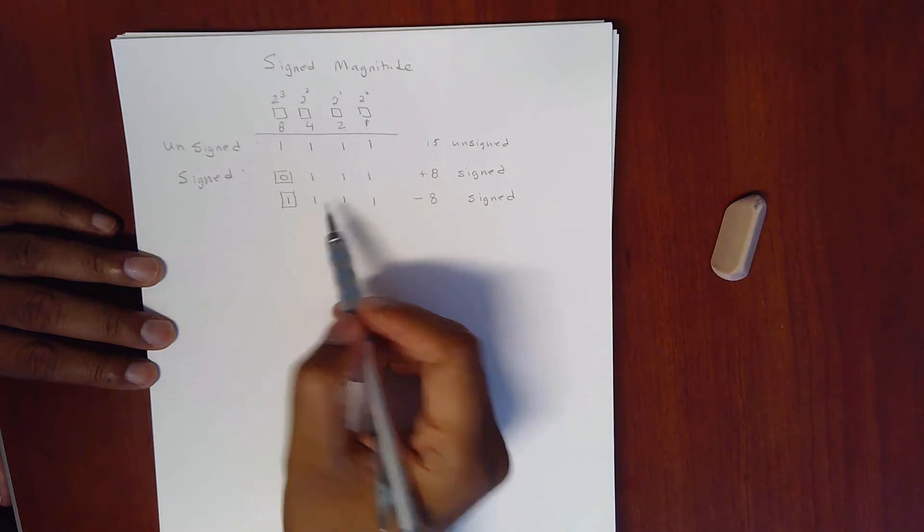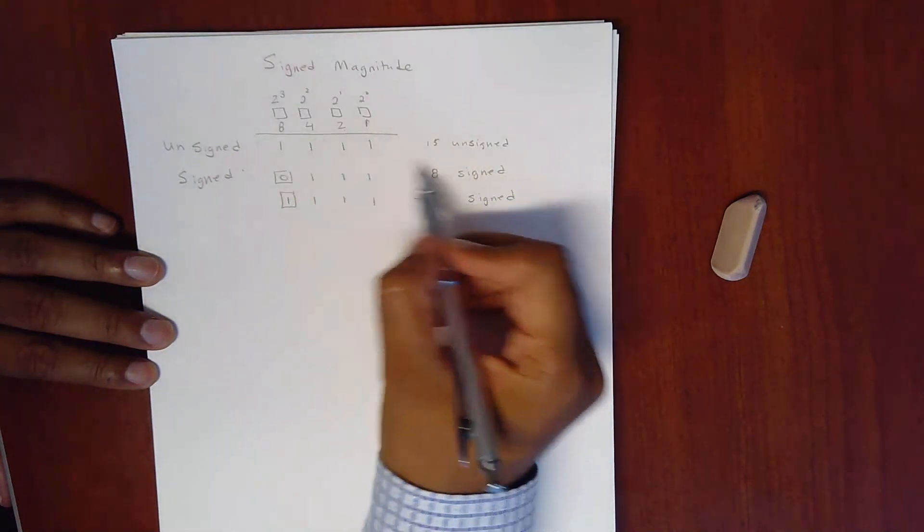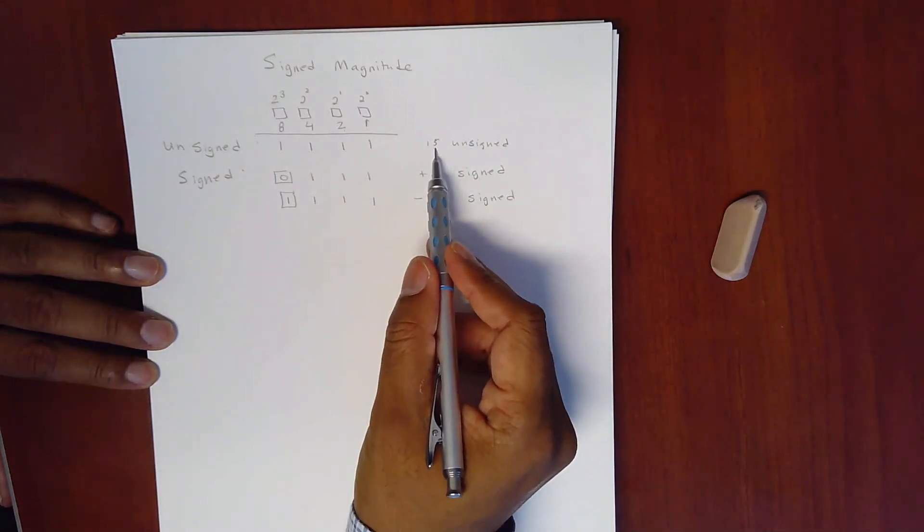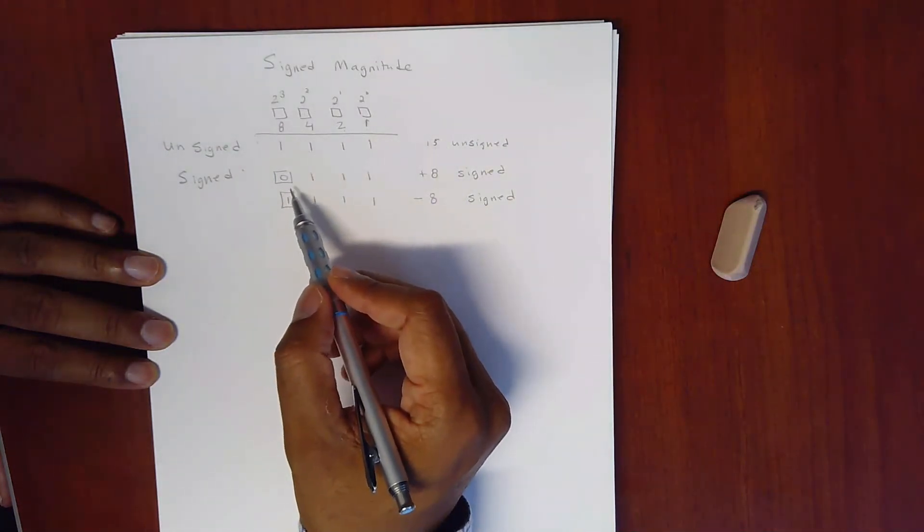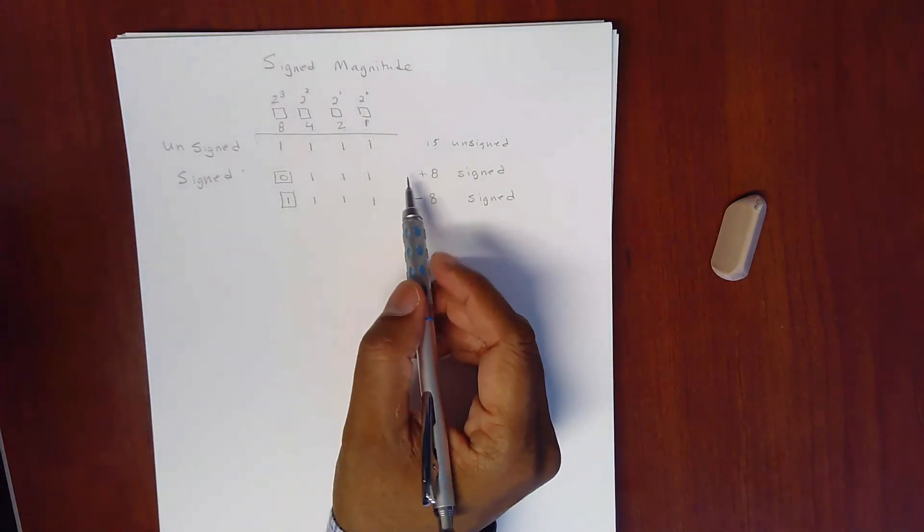So here, a plus 15 unsigned will fit within 4 bits, but a 15 will not fit in a signed 4 bit. Why? Because the highest number you can get is 8.